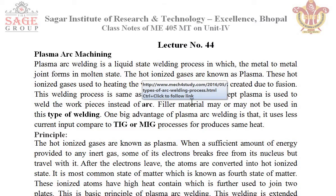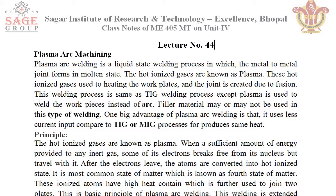This welding process is similar to TIG — Tungsten Inert Gas welding, which you have studied before. One key difference is that plasma arc welding uses less current input compared to TIG or MIG processes to produce the same heat.